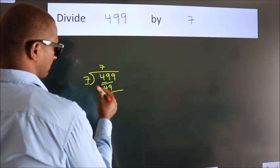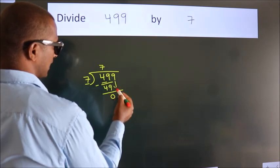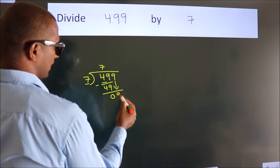Now we should subtract. We get 0. After this, bring down the beside number. So 9 down. So 9.